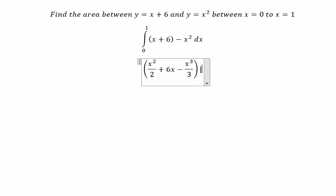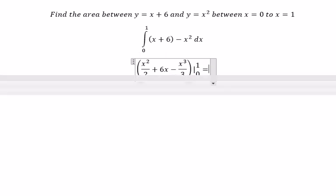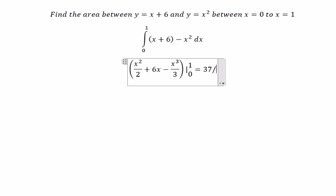We have the bounds from 0 to 1. We put the numbers in and you can get the final answer, which is 37 over 6. That's the end, thank you for watching.